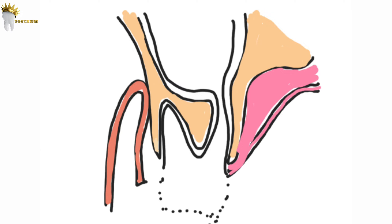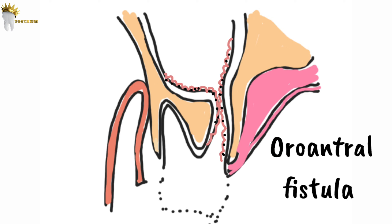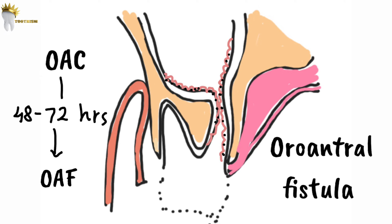So what is a fistula? When this communication gets epithelialized — meaning lined by cells from the oral epithelium — it is called an oroantral fistula. This happens when the oroantral communication is present for at least 48 to 72 hours. A fistula is a permanent epithelialized tract, which is why we should close it surgically within 48 hours so the communication doesn't become permanent.